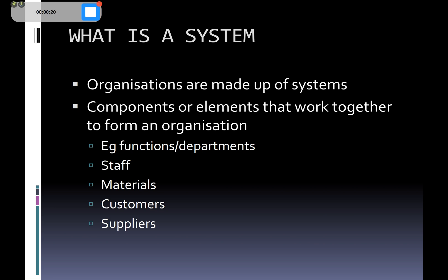We're looking at an organisation, and over the years academics and theorists have been trying to figure out a way of describing what actually happens in business — how do we structure it, what's the best way of organising the company. In systems theory, the idea is that the organisation is made up of lots of different systems, which really just means all the different components within the organisation that combine to create it.